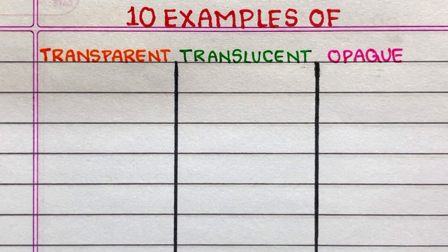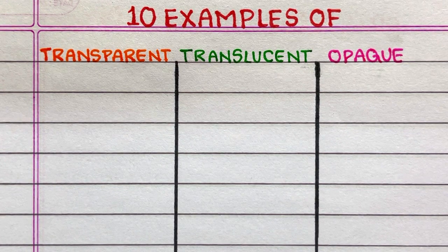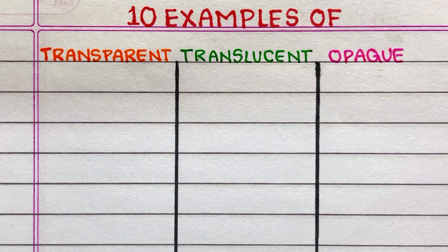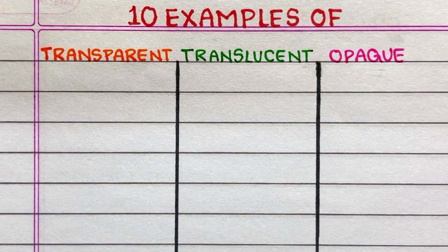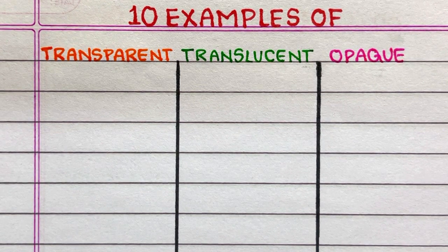The objects through which light can pass easily are called transparent objects. The objects through which light can pass partially are called translucent objects. The objects that do not allow the light to pass through them are called opaque objects. Here in this video, I will write 10 examples of transparent, translucent and opaque objects.